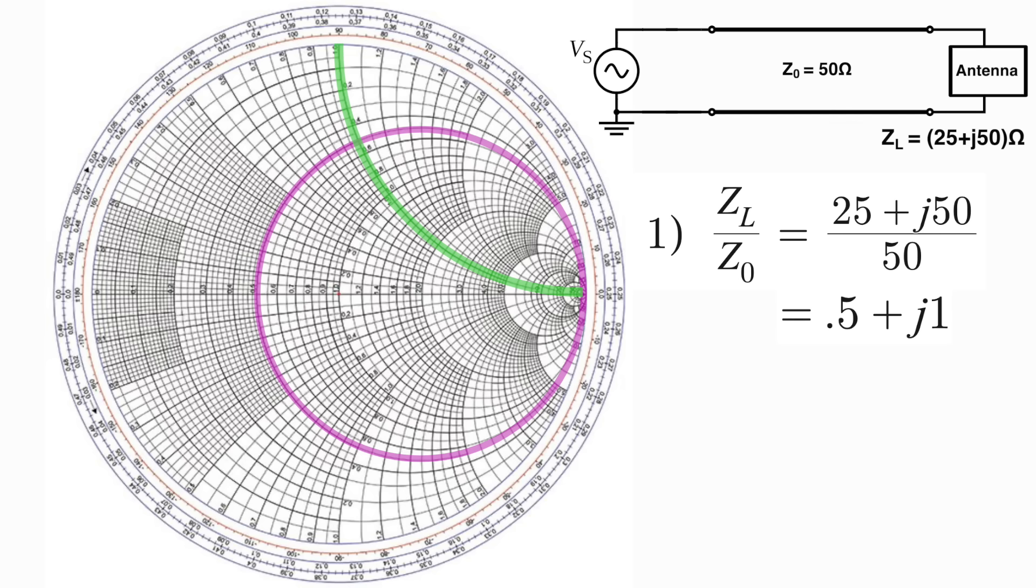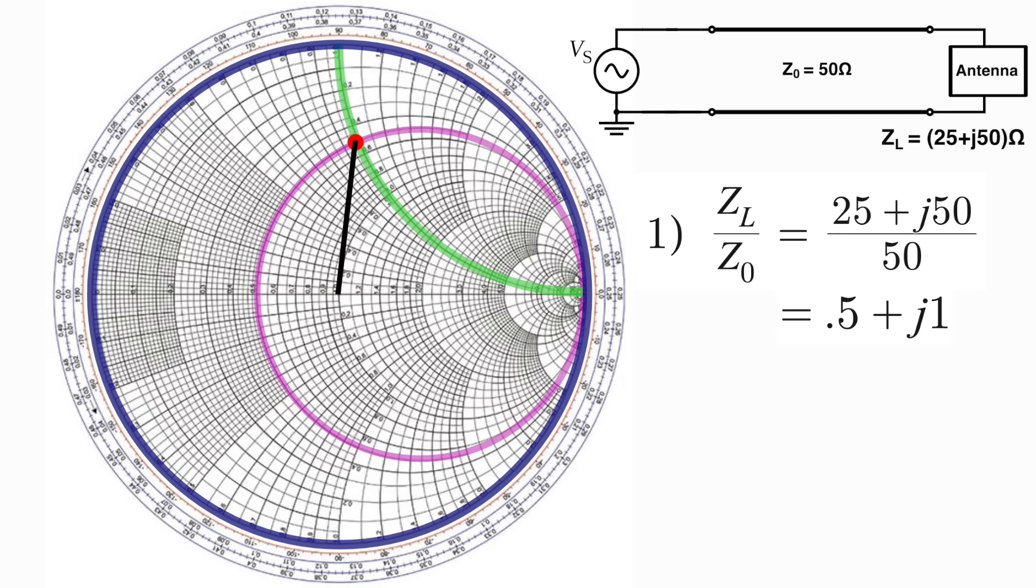We'll then highlight that associated circle of constant reactance. Again, those are always for the imaginary component. Then the intersection point of those two circles is going to tell us how much of our wave will reflect back from the antenna. And that's found by looking at the distance that point is from the center of the Smith chart, taking the very outer circle to be the unit circle, distance of one away.